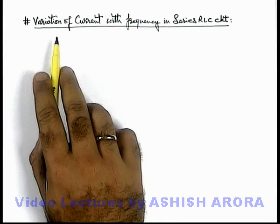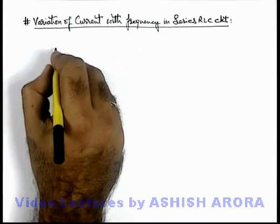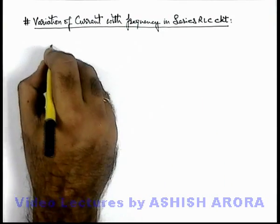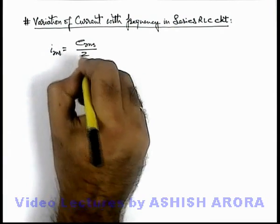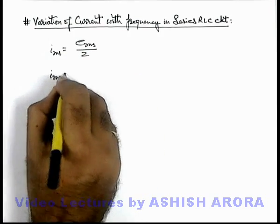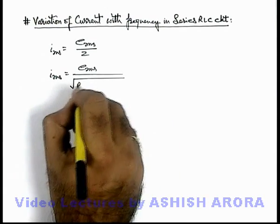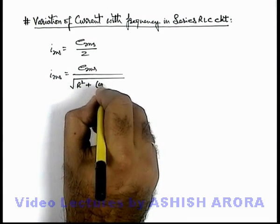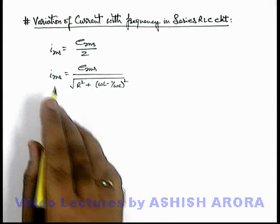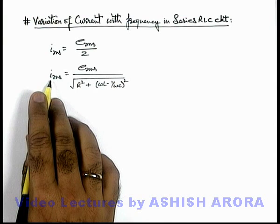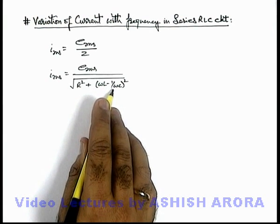Let us now study the variation of current with frequency in a series RLC circuit. As we already discussed, the RMS current in a series RLC circuit at any instant can be written as E_rms divided by Z, where the impedance Z is given by the square root of R² plus (ωL − 1/ωC)². The effective current in the series RLC circuit depends largely on the frequency of the alternating current.